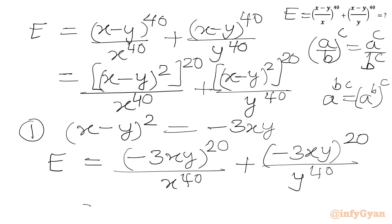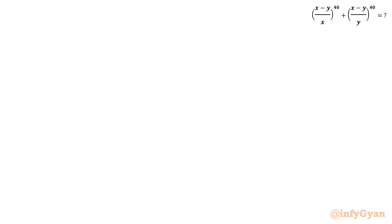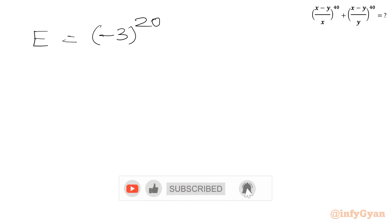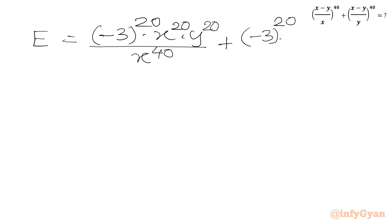Now we apply the exponent law: (ABC) whole power n equals A power n times B power n times C power n. So we expand the numerator as: minus 3 raised to the power 20, times x power 20, times y power 20, over x power 40; plus minus 3 raised to the power 20, times x power 20, times y power 20, over y power 40.